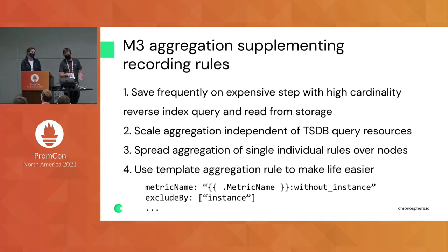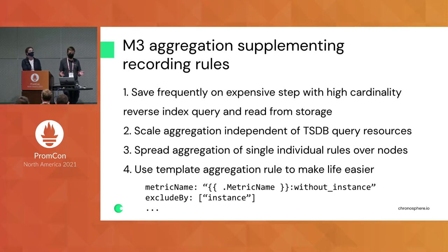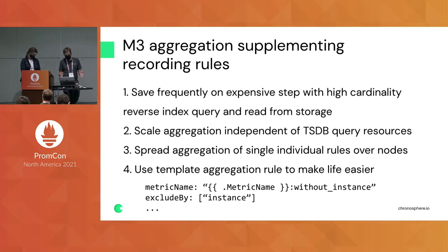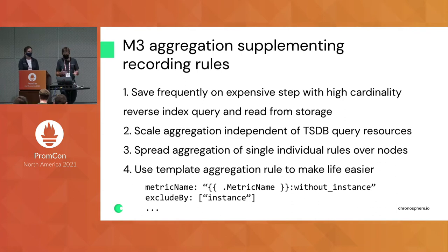M3 aggregation can supplement recording rules. As Gibbs said, it reconstitutes the metric — it doesn't allow arbitrary PromQL. But the majority of the problem is not in any other part of the expression except a few distinct high-cardinality labels that you can aggregate away and reconstitute as a new counter. This avoids reverse index query pressure and releases query bandwidth on Prometheus or your remote storage, so you can separate and scale aggregation independently from the TSDB without slowing down dashboards or other alerts.